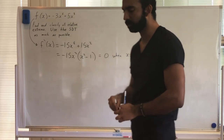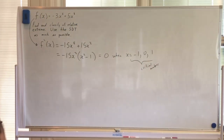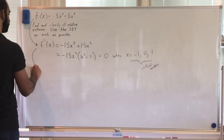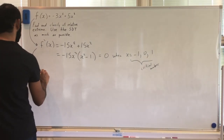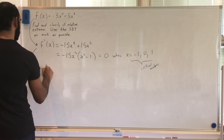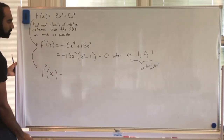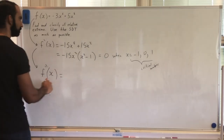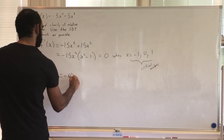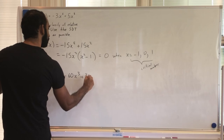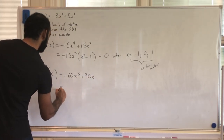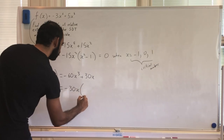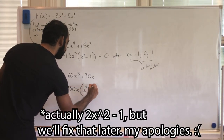Now I find my second derivative. That is negative 60x cubed plus 30x, which we can factor as negative 30x times x squared minus one.